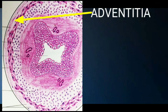The outermost layer is called the adventicia, which is made up of loose connective tissue and contains many blood vessels, nerves, and also adipocytes or fat cells.